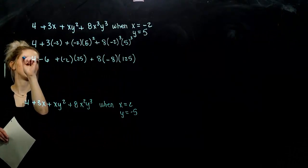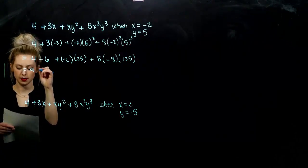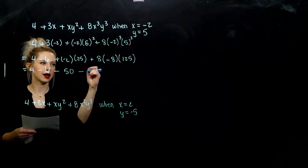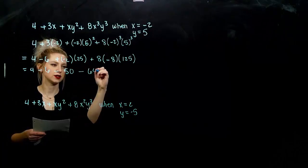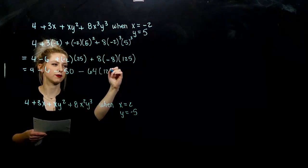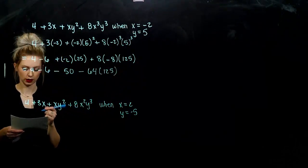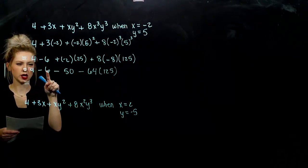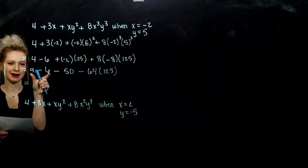So we just have to evaluate in pieces carefully as we're going. So what am I looking at? 4 minus 6, I'm subtracting off 50, and I've got 8 times 8 is 64 times 125. So let's start combining.